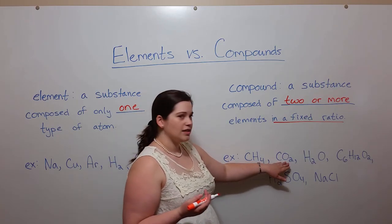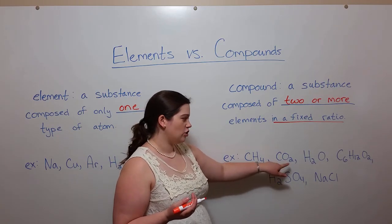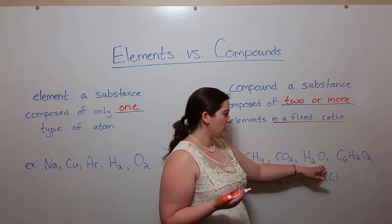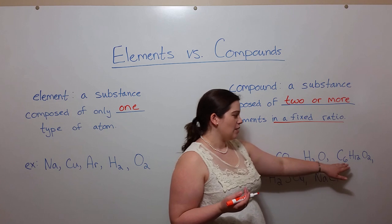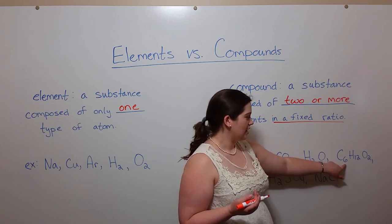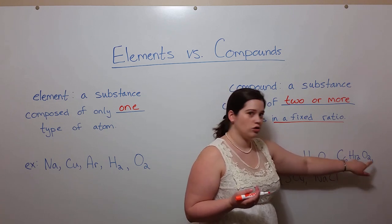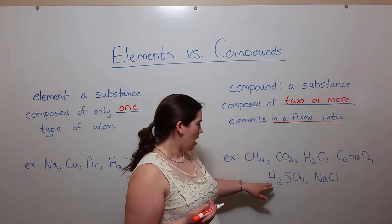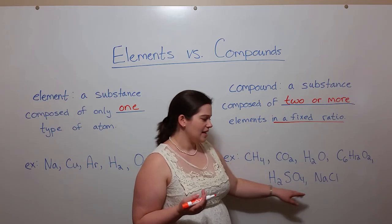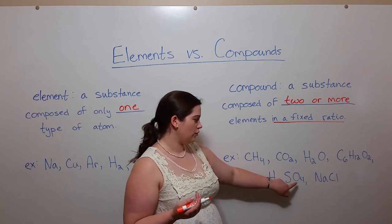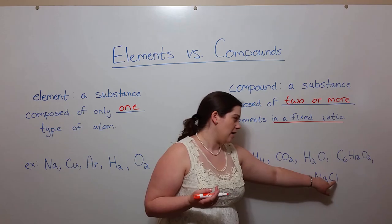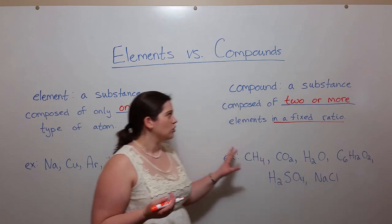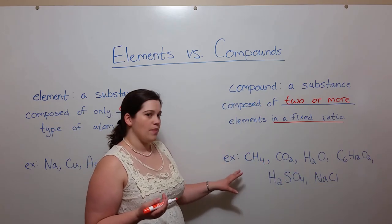Again, something like carbon dioxide, it's always one carbon and two oxygens. Water is always two hydrogens and one oxygen. This is a type of sugar with six carbons, 12 hydrogens, and two oxygens. We've also got sulfuric acid, so two hydrogens, a sulfur, and four oxygens. Sodium chloride is one each of sodium and chlorine. So these are all examples of compounds.